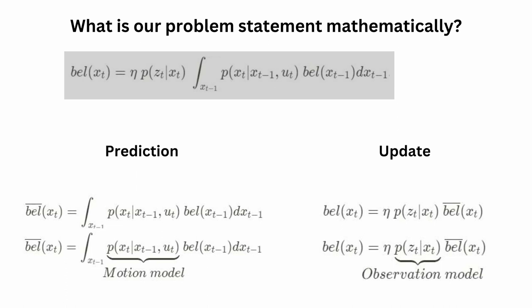This equation — the prediction step and update step together — is called the base filter. I did not introduce the base filter with heavy definitions initially, but we literally built it using a problem statement (belief of X(t)), Bayes' rule, and some ideas from probability. The base filter is a recursive state estimation technique based on Bayes' rule and probability. It is a general framework that uses two models — motion and observation — to estimate the value of the state, which can include position, velocity, landmark positions, and more.